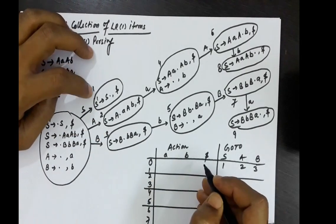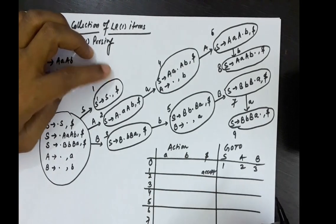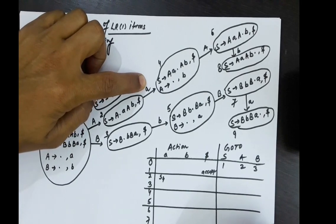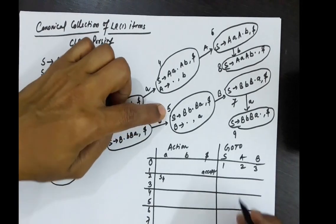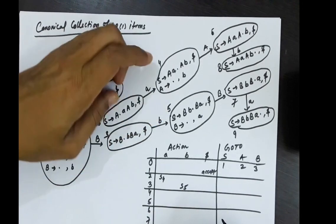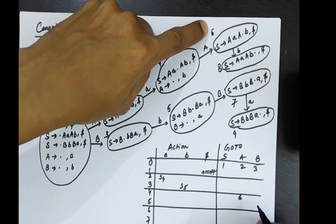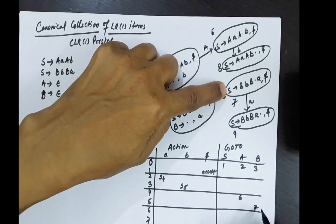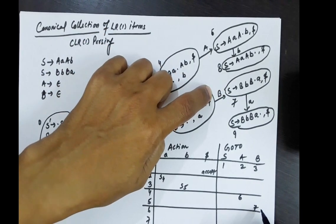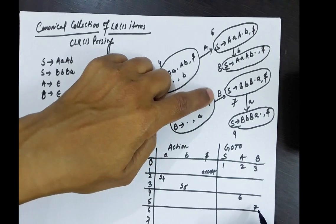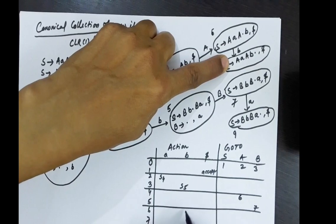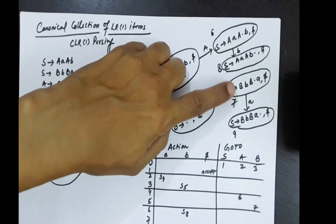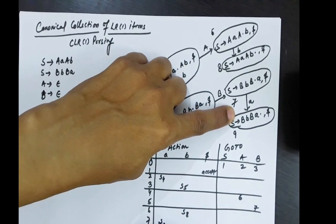From state 1, no shift transition, but on dollar we accept. From state 2 on small a: shift to state 4 (write S4 since small a is a terminal — shift operation). From state 3 on small b: go to 5 (write S5). From state 4 on capital A: go to 6. From state 5 on capital B: go to 7. From state 6 on small b: shift to 8 (write S8). From state 7 on small a: shift to 9 (write S9).